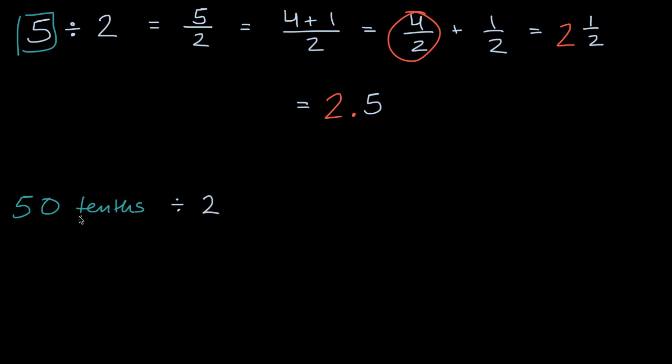And so if I have 50 of something and I divide it by two, that's going to result in 25 of the something. So this is going to be equal to 25 tenths.